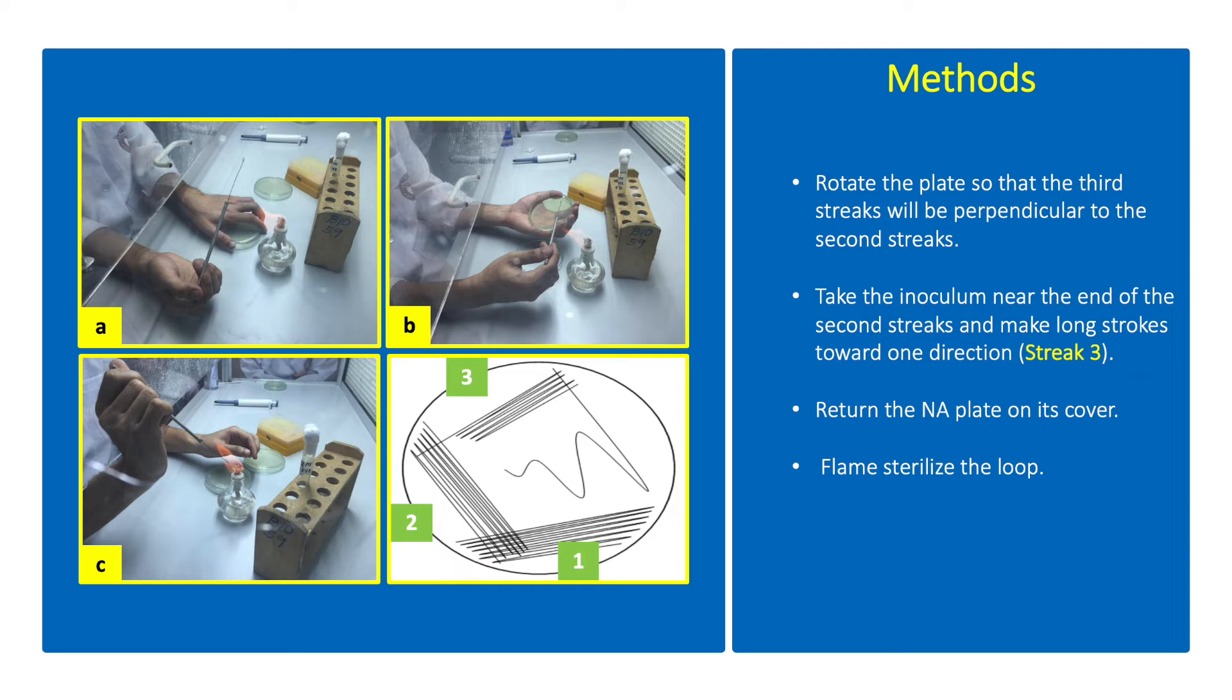Rotate the plate so that the third streaks will be perpendicular to the second streaks. Take the inoculum near the end of the second streaks and make long strokes toward one direction. Return the NA plate on its cover, then flame sterilize the loop.